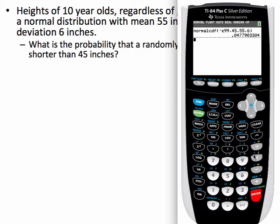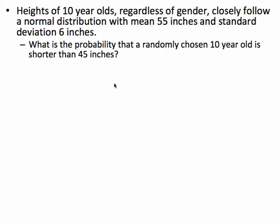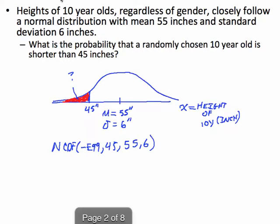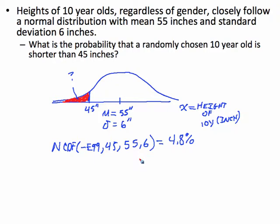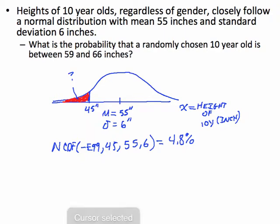We've got about 4.8% of the kids less than that height. So the probability of randomly selecting a 10-year-old and having them be less than 45 inches is pretty rare — about 4.8% of the time.